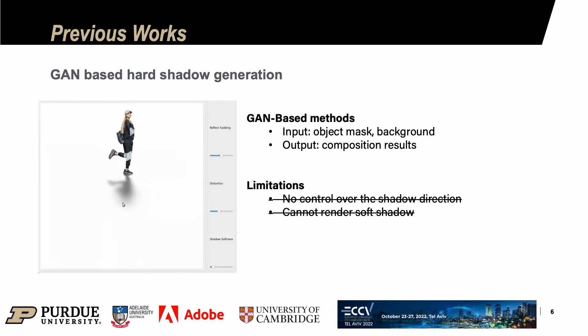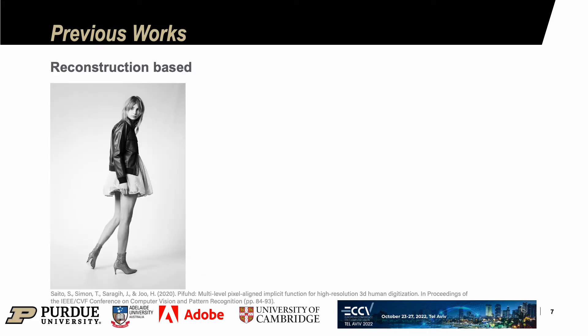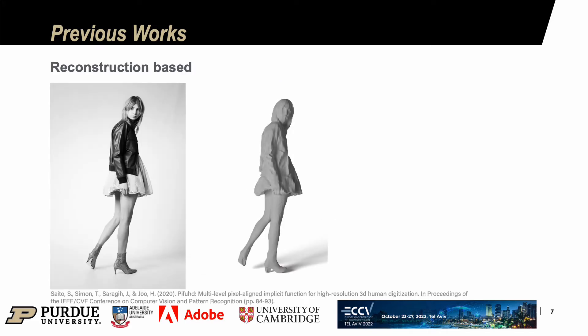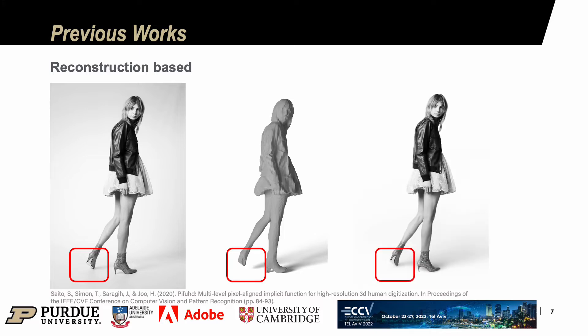Our work can naturally render a soft shadow with a simple user click. Single image reconstruction based methods can predict the 3D model for some specific categories. However, as the methods have some camera assumptions, the shadow contact regions have errors consistently, which affects the realism. Our method does not suffer from this artifact and can render more realistic shadows.